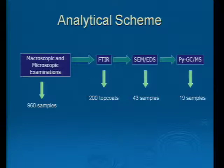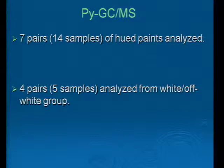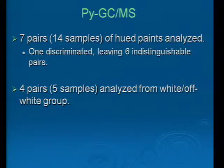Seven of those pairs, or 14 samples, were part of the hued group. Four pairs, or five samples, were part of the white and off-white group. From the hued group, one was discriminated, leaving six indistinguishable pairs. So at this point in the analytical scheme, this is where we stopped — there are six pairs that we can't differentiate in that hued group.